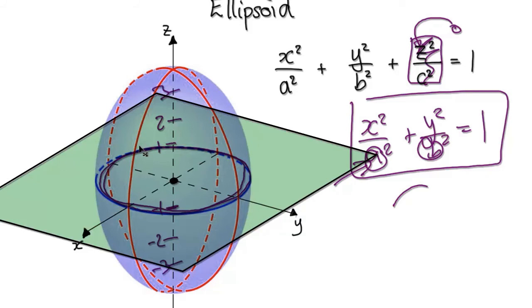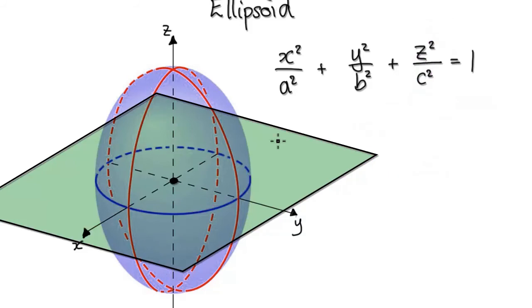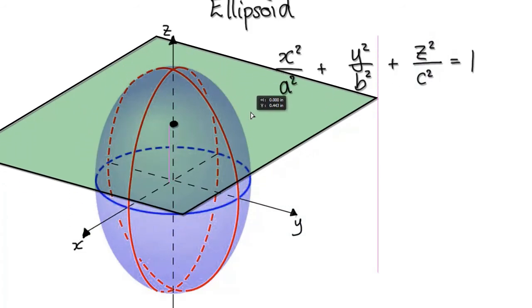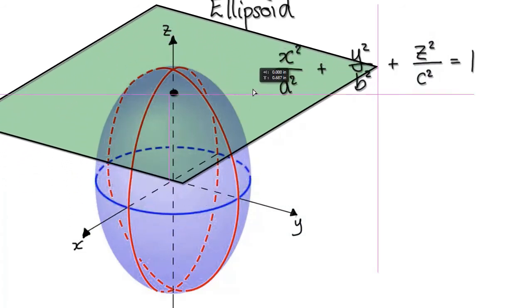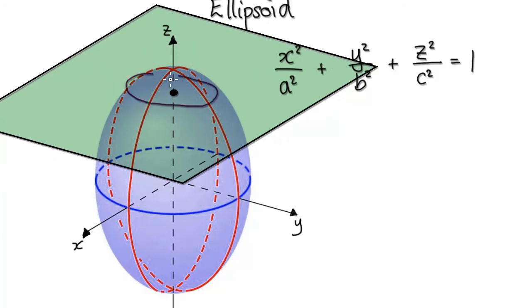If you increase the height, you can see that you're going to get a smaller circle or ellipse up there.